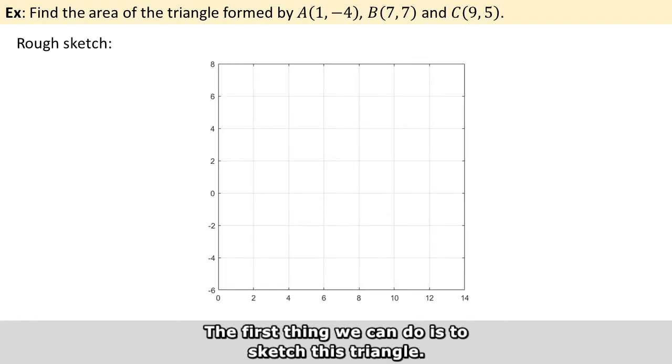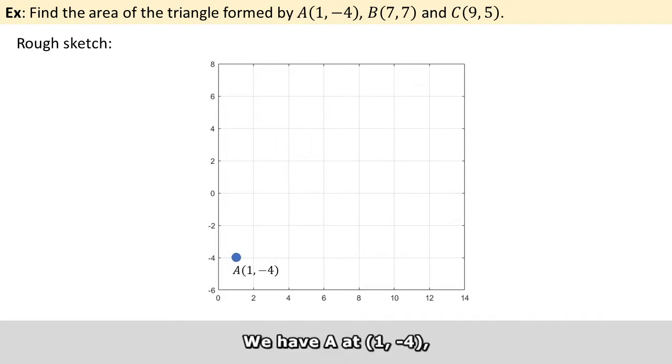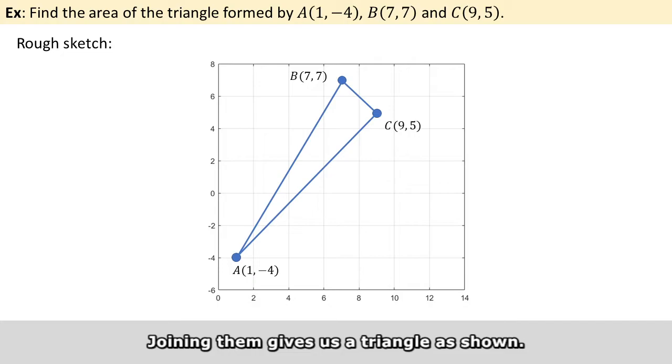So the first thing we can do is to sketch this triangle. We have A at (1, -4), B at (7, 7), and C at (9, 5). Joining them gives us a triangle as shown.